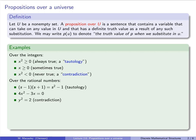The second statement is 4x² − 3x = 0. Factoring, we get x(4x − 3) = 0, so this is only true if x = 0 or x = 3/4. It's true in these two cases and false in all others. It has a definite truth value as a result of any substitution of a rational number, so this is a proposition over U. It is neither a tautology nor a contradiction, because it is not always true or always false.